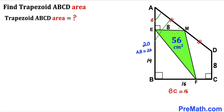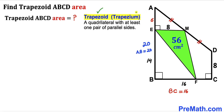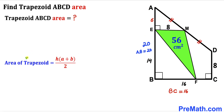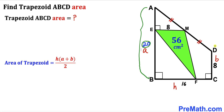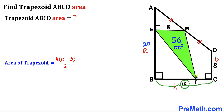Now we'll calculate the area of trapezoid ABCD. Recall that a trapezoid — sometimes called a trapezium — is a quadrilateral with at least one pair of parallel sides. Here, side CD is parallel to side AB. The area of a trapezoid formula is: area equals height H times (base a plus base b), all over 2. In this case, base a is 20, base b is 8, and the height of the trapezoid is 16.